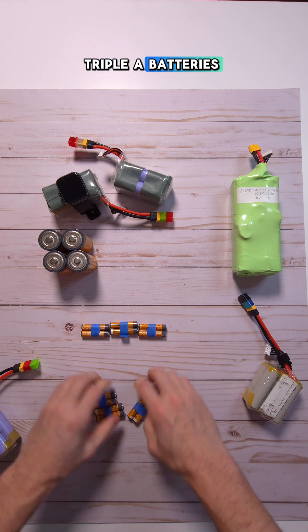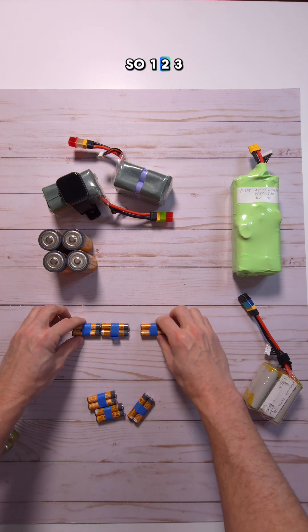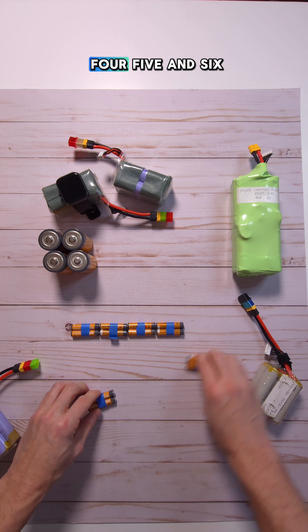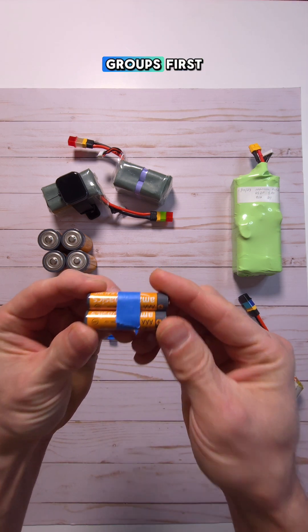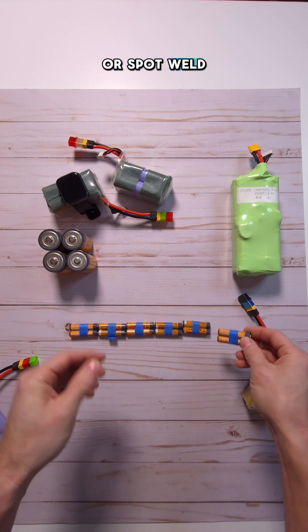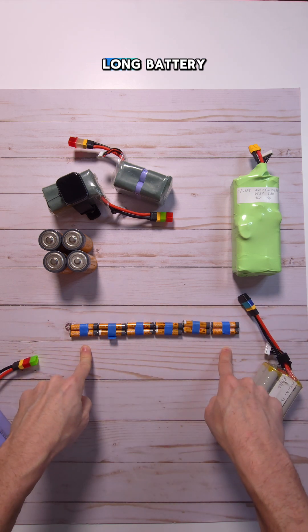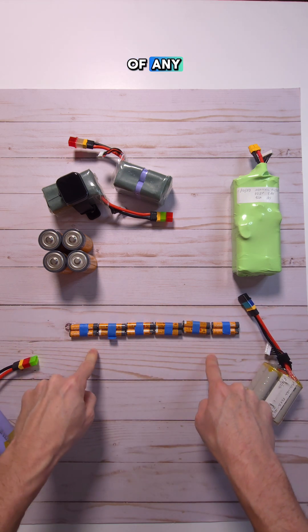we've got our triple A batteries down here. So one, two, three, four, five, and six. You always make your parallel groups first, and then you solder everything or spot weld things together. So this would be a really long battery. It's probably not going to fit on top of any drone.